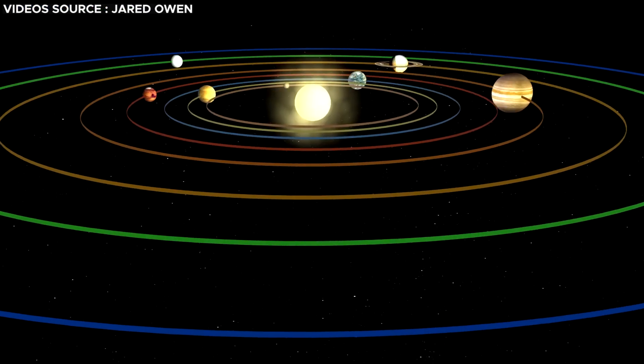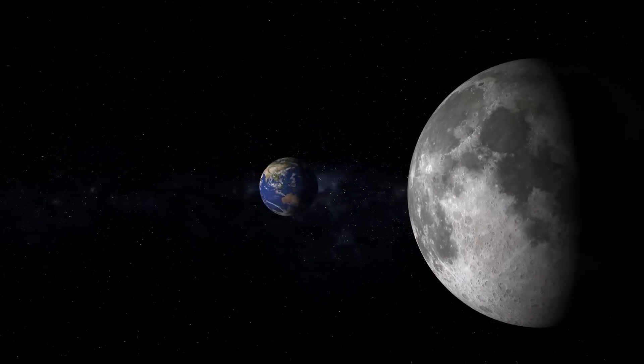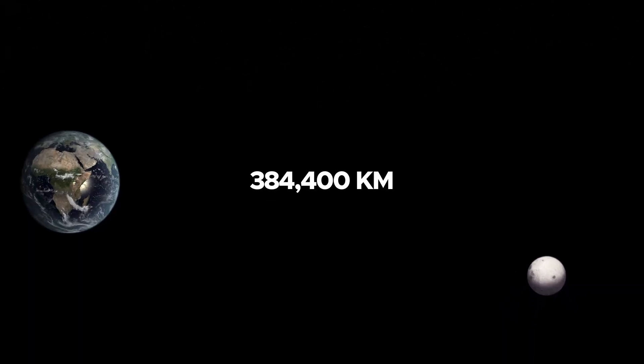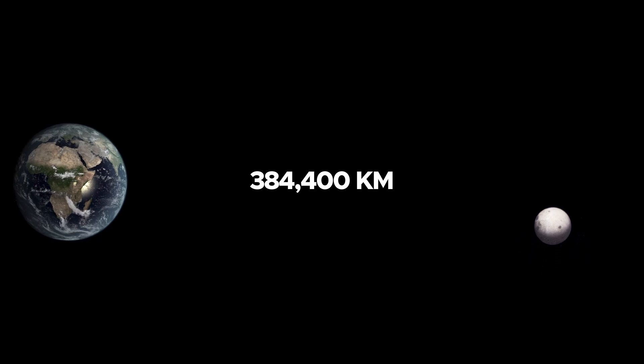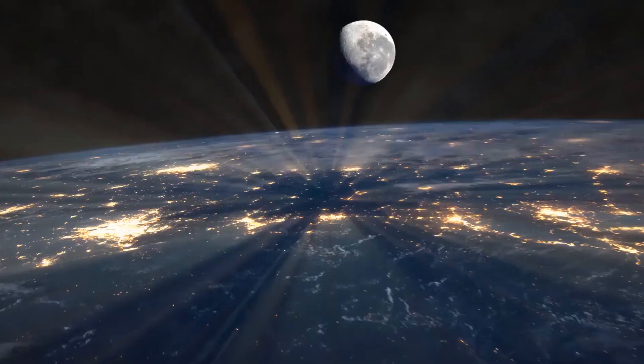Nevertheless, over the course of millions of years, the cumulative impact becomes substantial, resulting in the moon's migration approximately 384,400 kilometers away from its initial proximity to Earth.